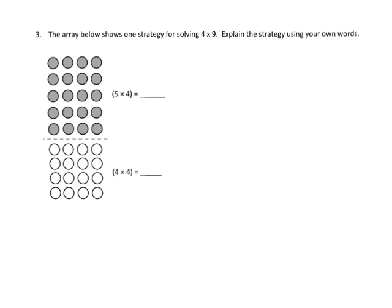Our last example for this video is we've got an array that shows one strategy for solving 4 times 9. Explain the strategy. Now first thing I'm noticing is they wrote the problem 4 times 9, but then they gave us the array that traditionally would actually be 9 times 4. So I'm going to really talk about 9 times 4 rather than 4 times 9, but they're the same. That's the commutative property in action right there.